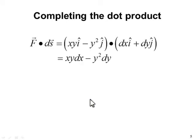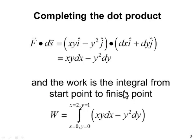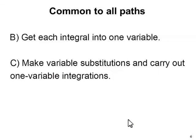Carrying it through, F dot ds is xy*dx minus y²*dy. And the work is the integral from the start point to finish point. The work integral is still complicated by the fact that x and y are related to one another for any given path. And the limits of the integral have both x and y because we don't yet know the relationship between x and y for the path that we're going over. What we want to do now is get each integral into a single variable. What we'll do is make variable substitutions and then we'll be able to carry out one variable integrations.